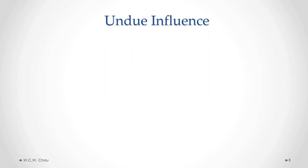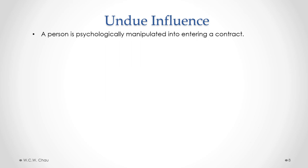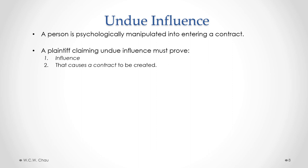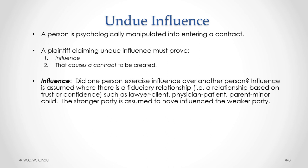The contractual defect of undue influence is where someone has been psychologically manipulated into entering a contract. To prove undue influence, a plaintiff must show two things: first, influence, and second, that that influence causes a contract to be created. Influence is assumed where there is a fiduciary relationship between the two parties. A fiduciary relationship is considered to be a relationship based on trust or confidence, such as the relationship between a lawyer and a client, a physician and a patient, or a parent and a minor child. The stronger party in a fiduciary relationship is assumed to have influenced the weaker party.